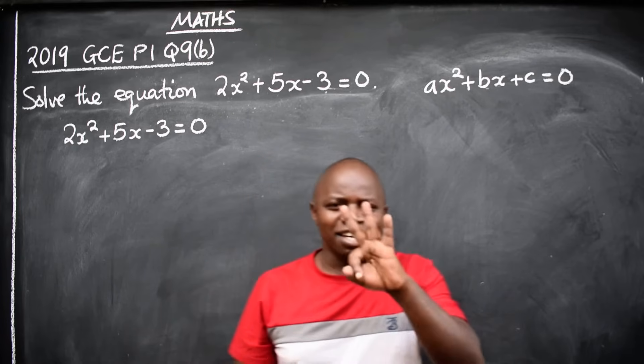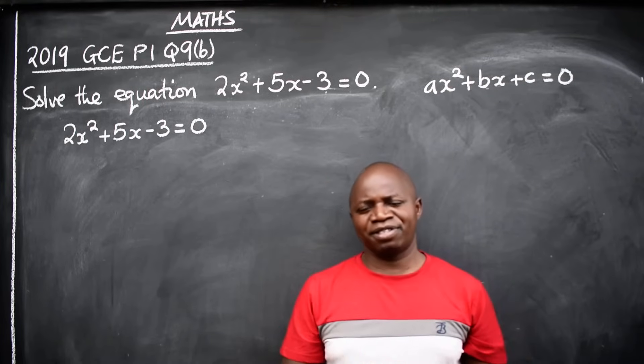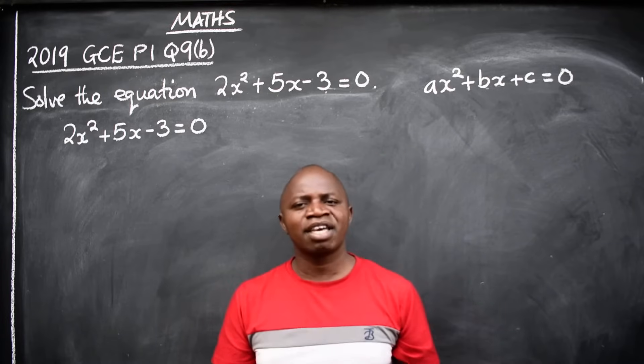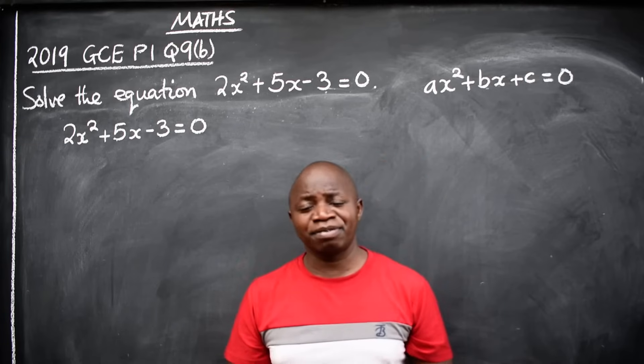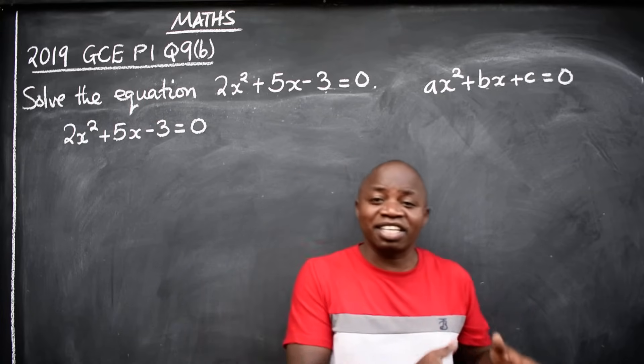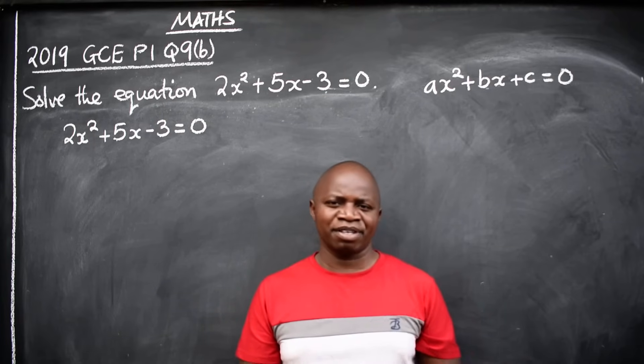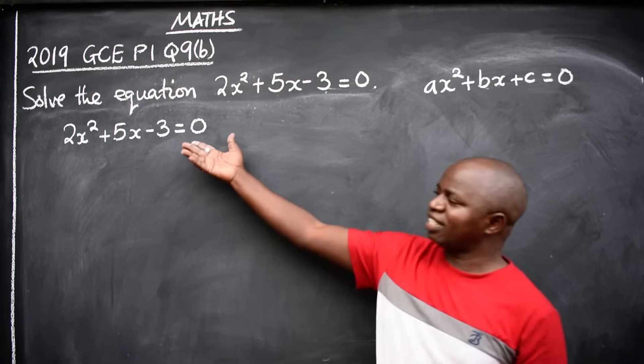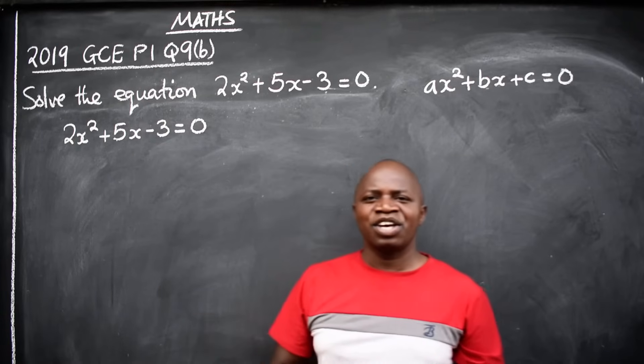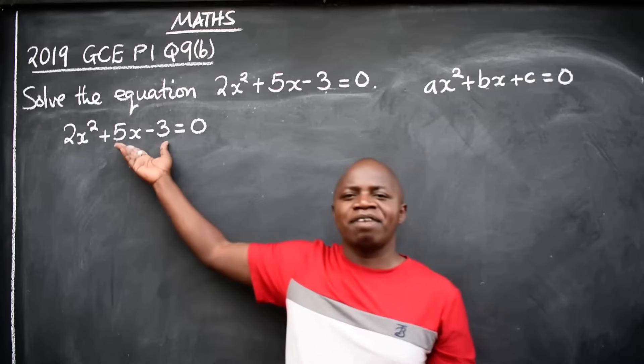So we have three ways, three methods of solving quadratic equations. You can solve by factorization, by using the quadratic formula, or by completing the square. Now, this equation was given in paper 1. Because in paper 1 you will not be allowed to use the calculator, it means the equation can be solved by factorization.